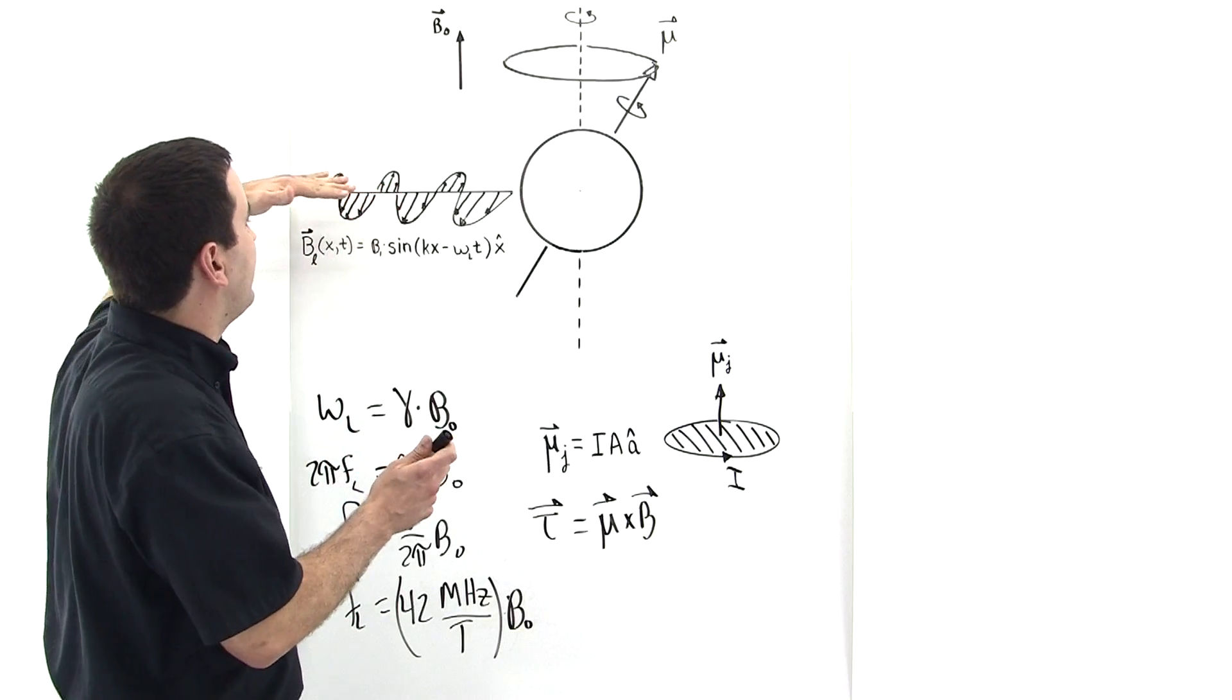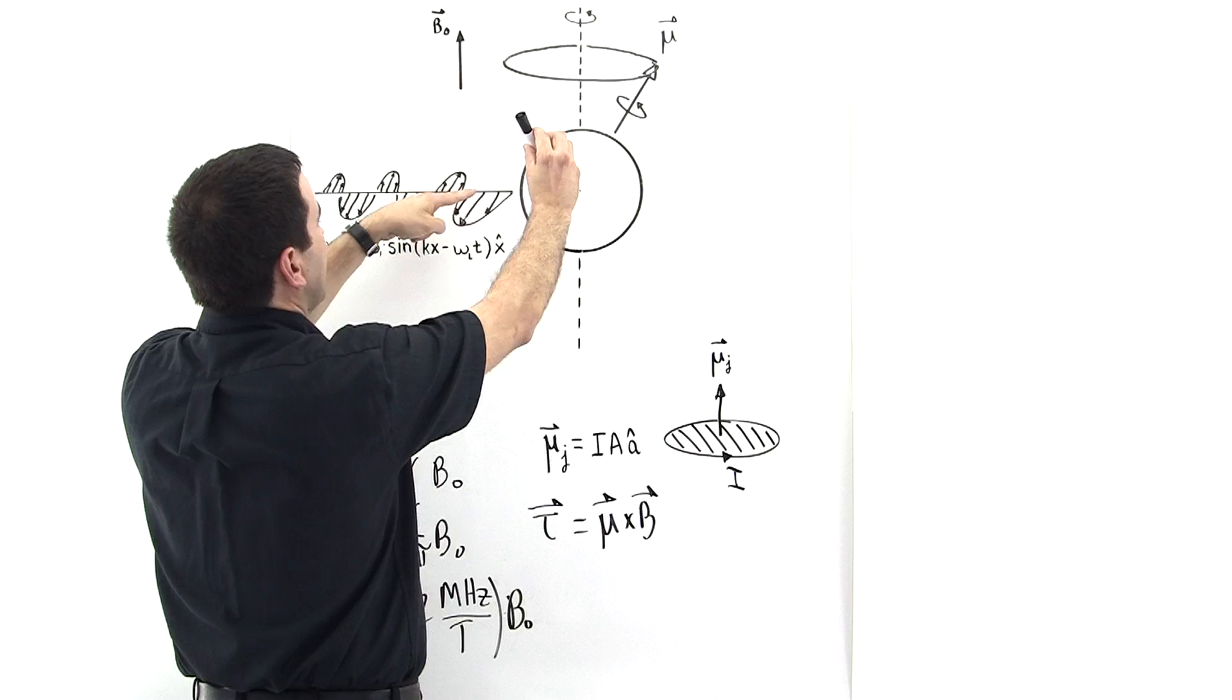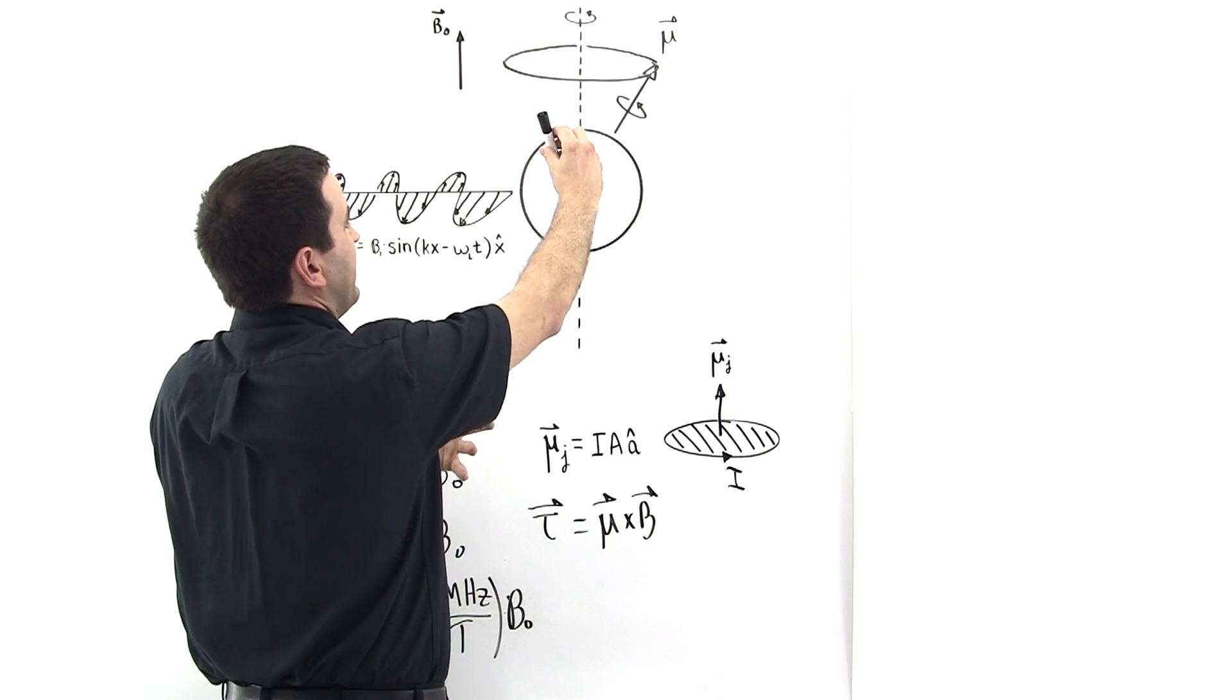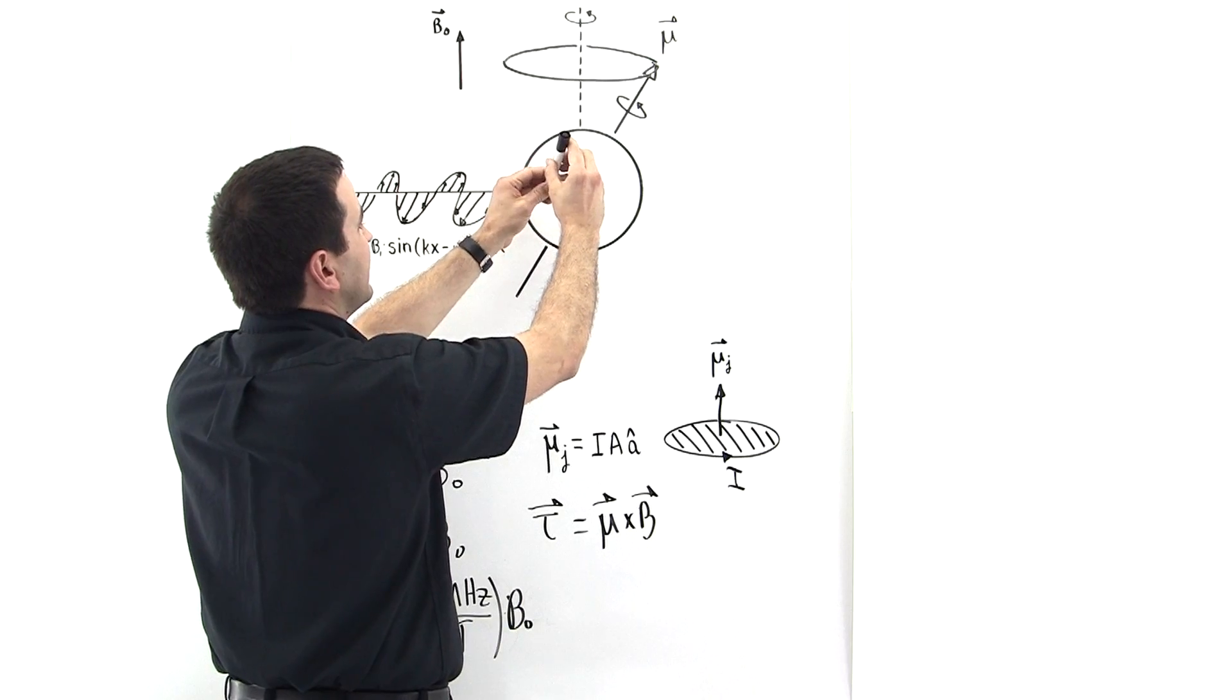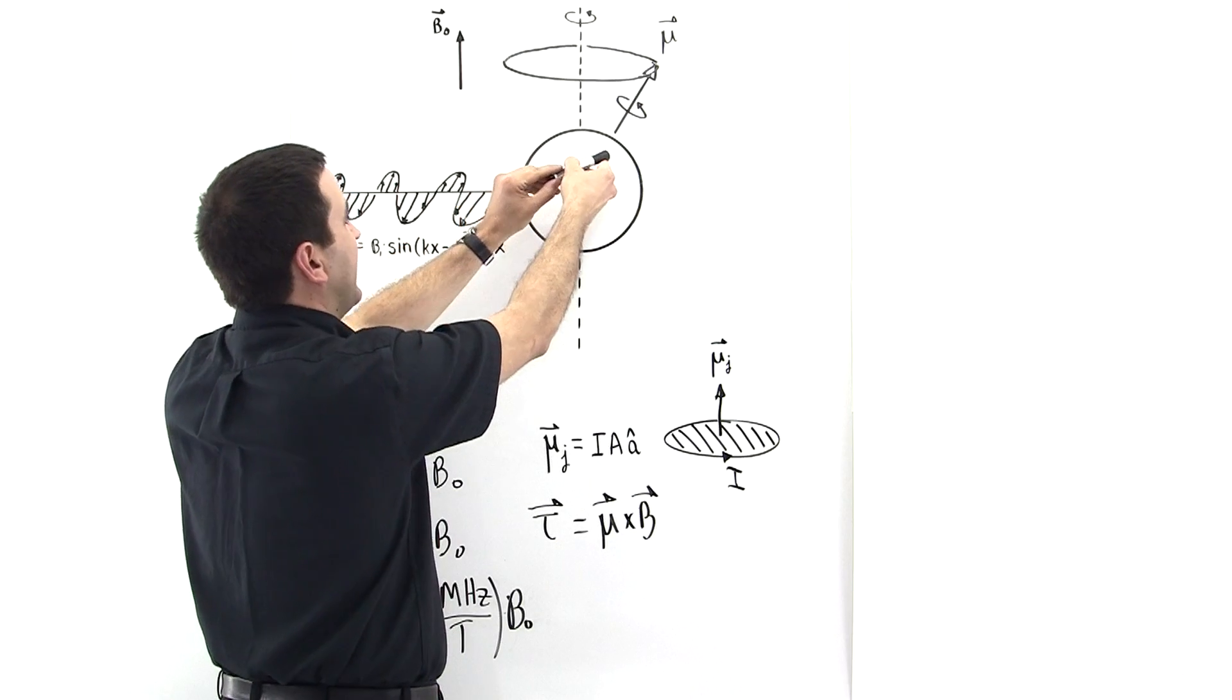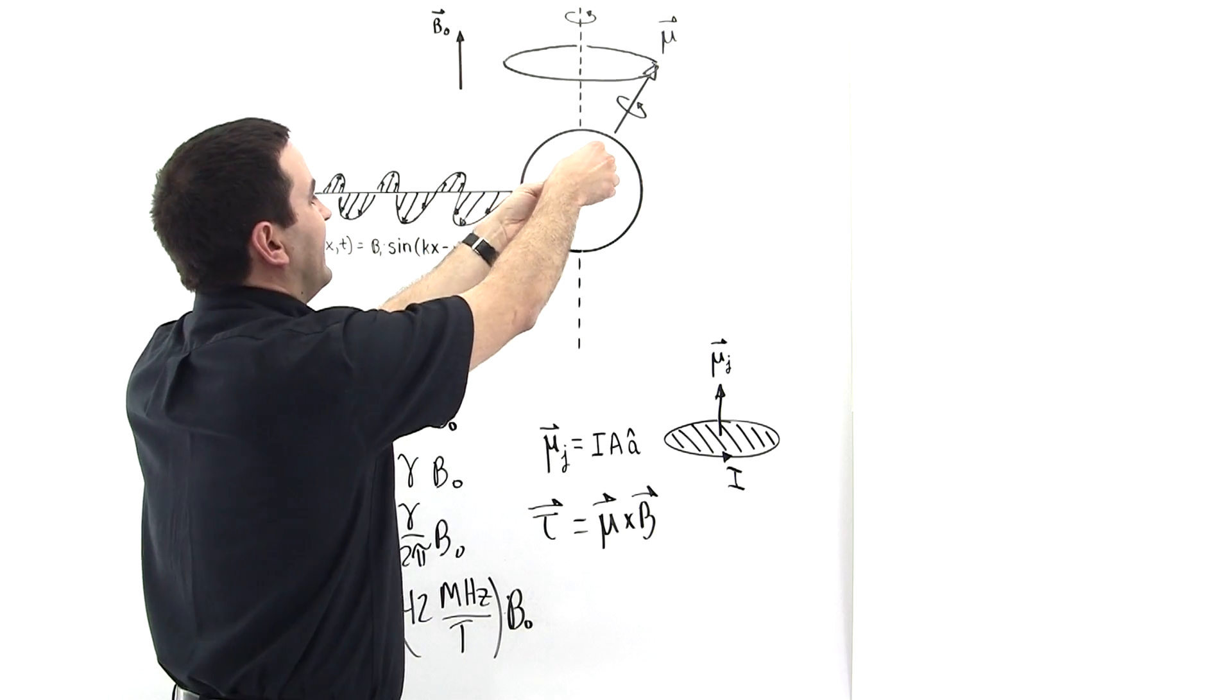If the frequency of this thing is matching the frequency of this guy, then whenever he comes around, say when he's right here, this guy is coming in. He's coming into contact with this B field vector that is out of the board. As a result of the cross product, they want to line up with one another. He experiences a torque that tends to line him up, and so he flattens out this way. But then as he continues to precess around, this thing is traversing past the proton, and so he flattens out some more. Constantly his precession is flattening out.